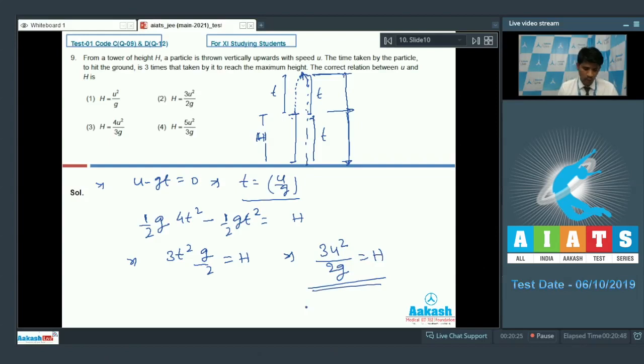Let's see the option now. For question number 9, it is 3u square by 2 g. Option 2 is the correct answer. I guess you must have got the answer for this question.